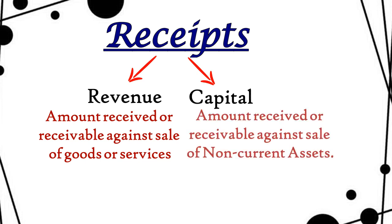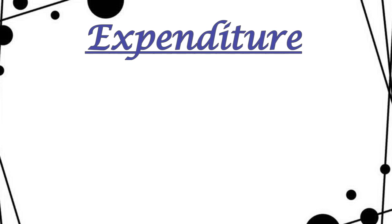Capital receipts are from your assets — those which you purchased for long-term use, not for business trading. If after some time you sell those assets and receive an amount, that is called capital receipts. So selling goods and services gives revenue receipts, and selling fixed/capital assets gives capital receipts.